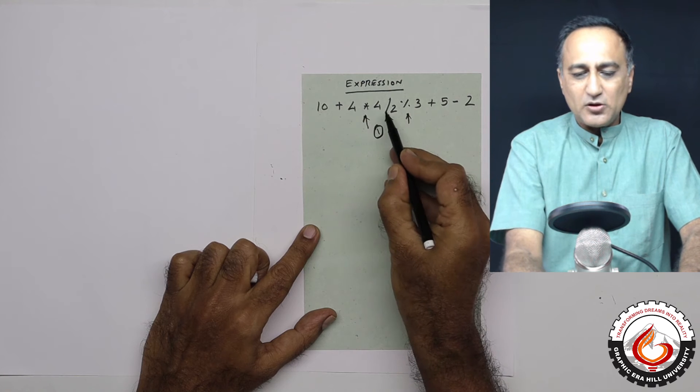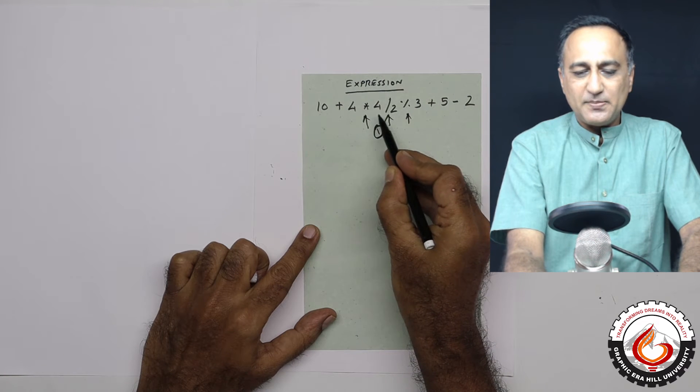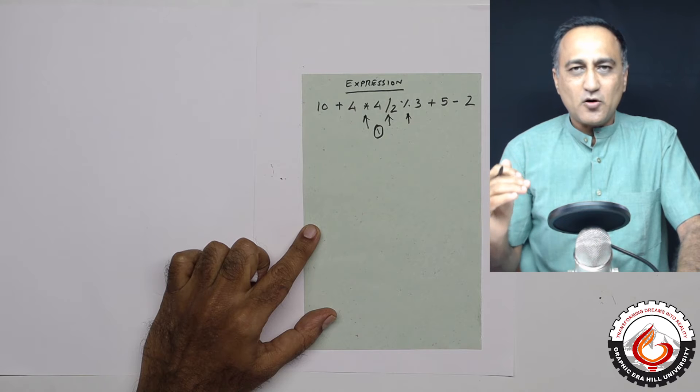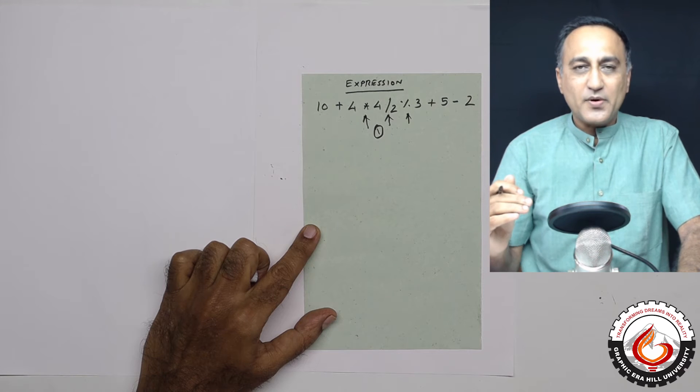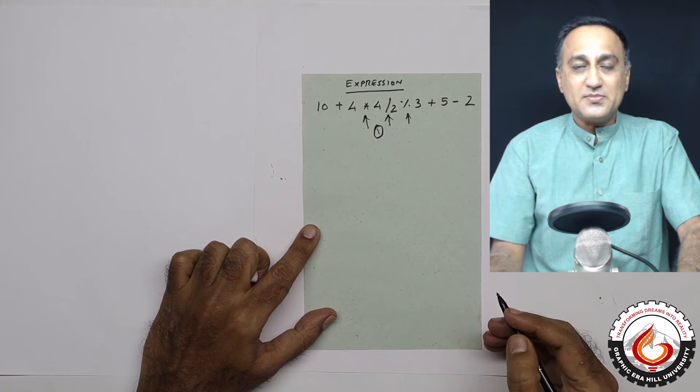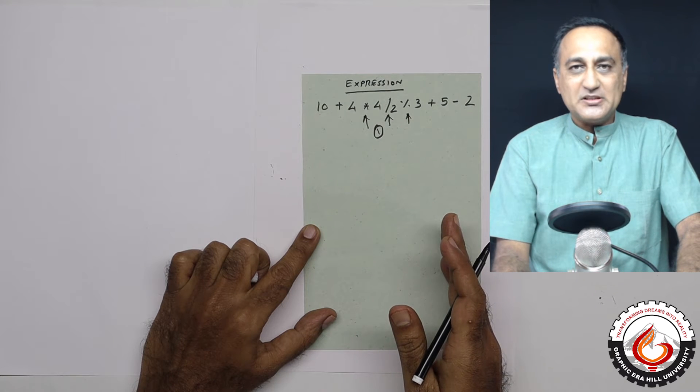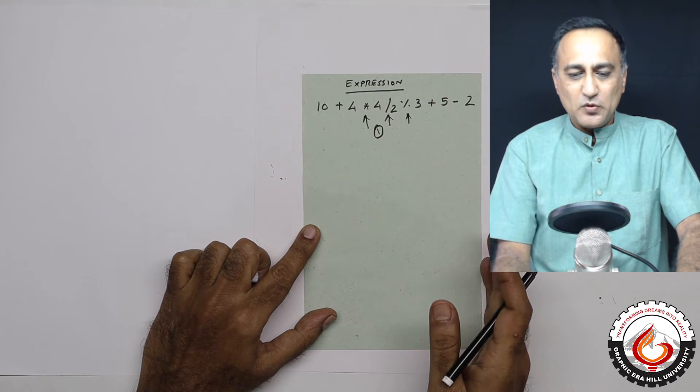Now since all these three operators, multiplication, division, and mod, have the same precedence, we need to make a call as to which is going to be evaluated first. This is where associativity comes into picture. It tells us that all mathematical operators are evaluated from left to right.